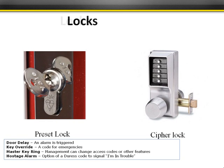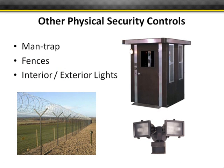Looking at lock types: door delay triggers an alarm if a door doesn't close within a set period of time. A key override system provides an emergency code — for example, fire departments may use it to shut off a false alarm. A master key gives management the ability to change access codes or access multiple parts of the building with one code. A hostage alarm provides a duress code — you enter a code that signals you're in trouble.